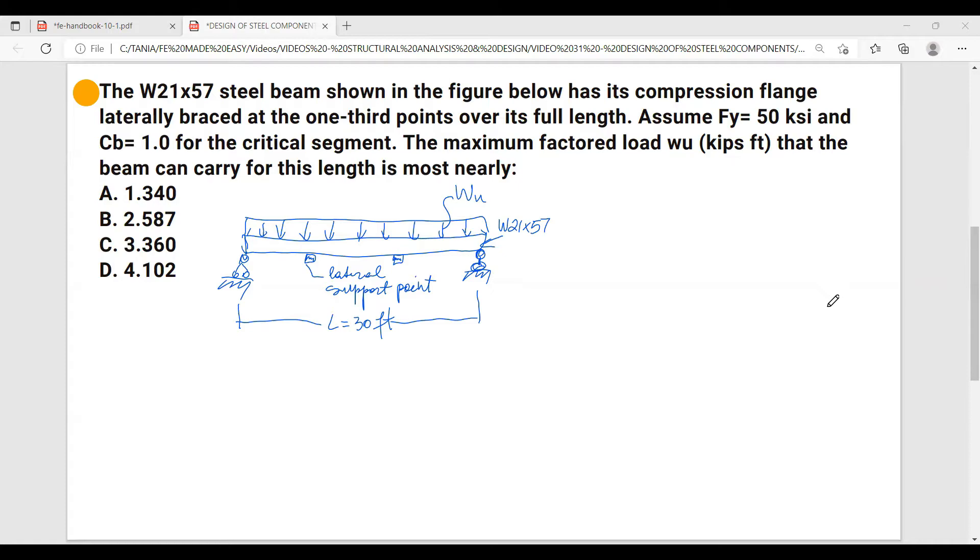But first of all, let's acknowledge that we have a simply supported beam with a uniformly distributed load, and the moment for this beam equals to wu times L squared over 8. So from this equation we need to calculate wu, and we know the length of the beam which is 30 feet, and we have to calculate the moment.